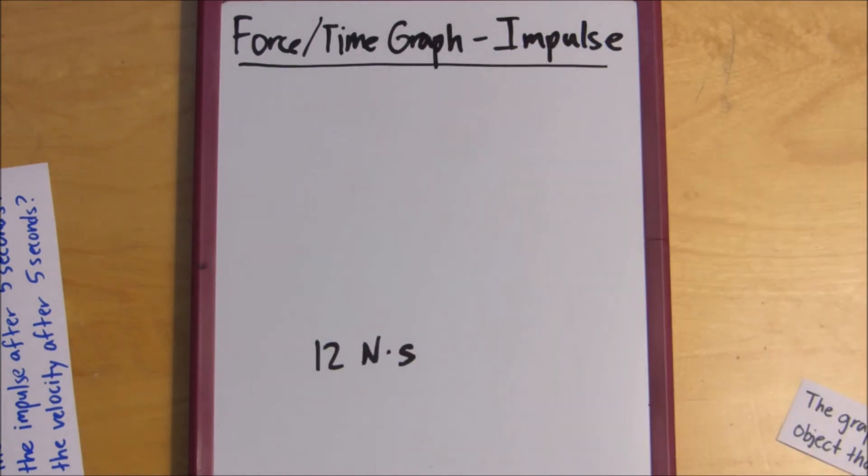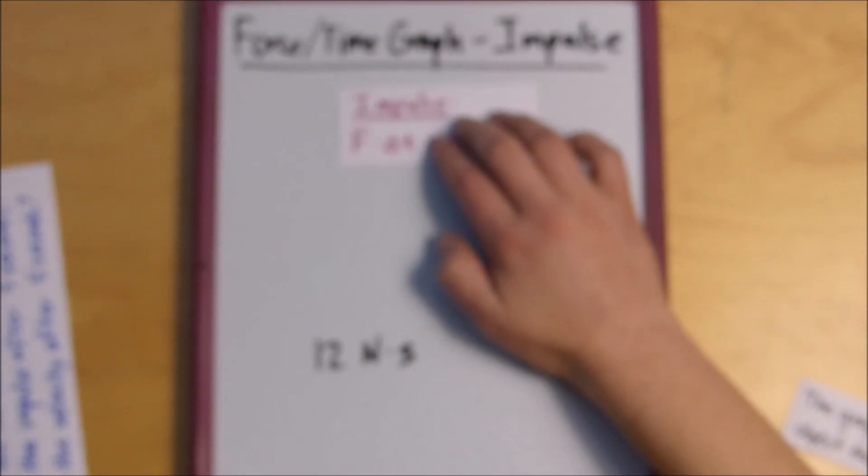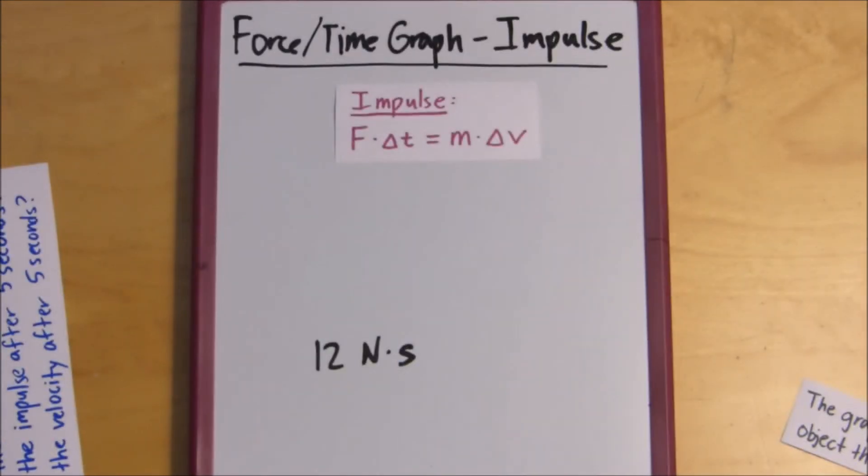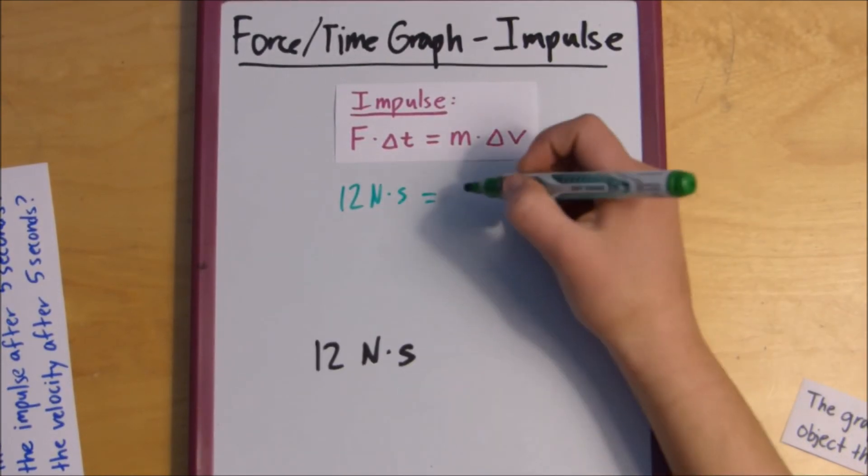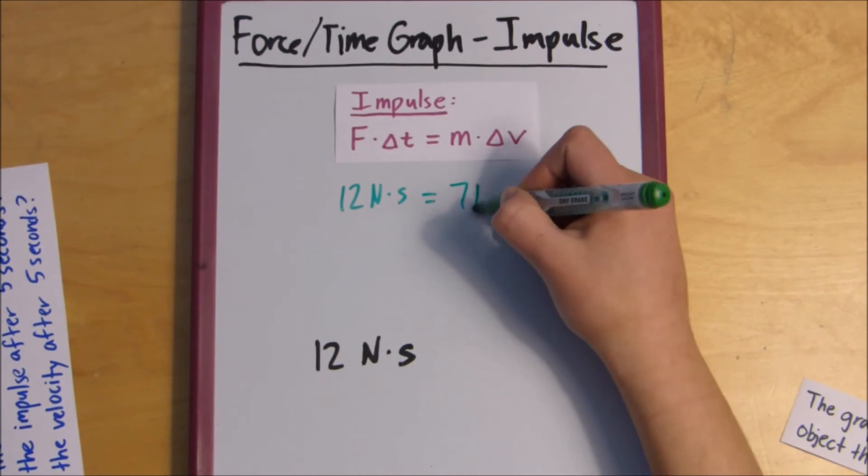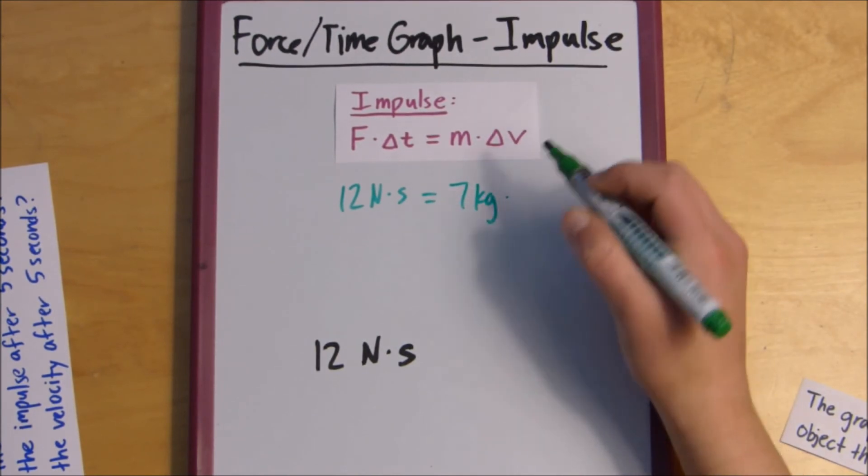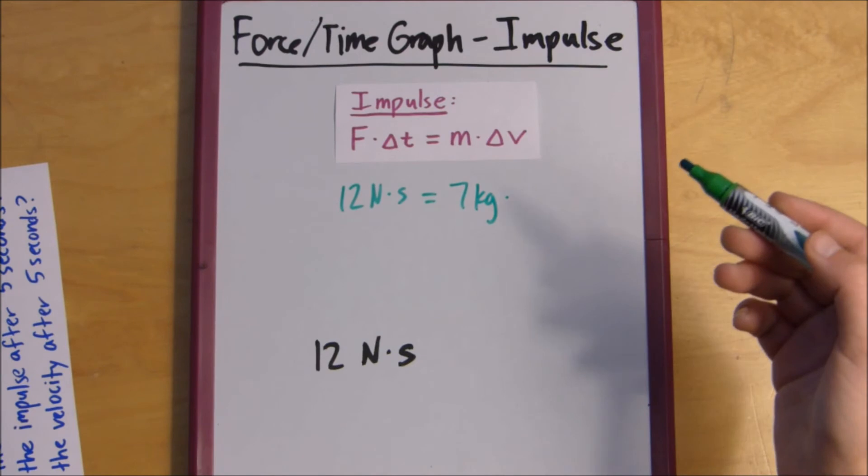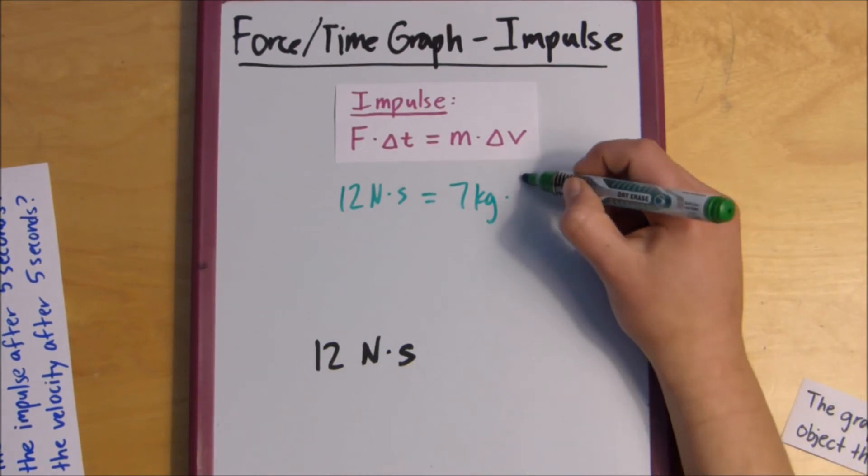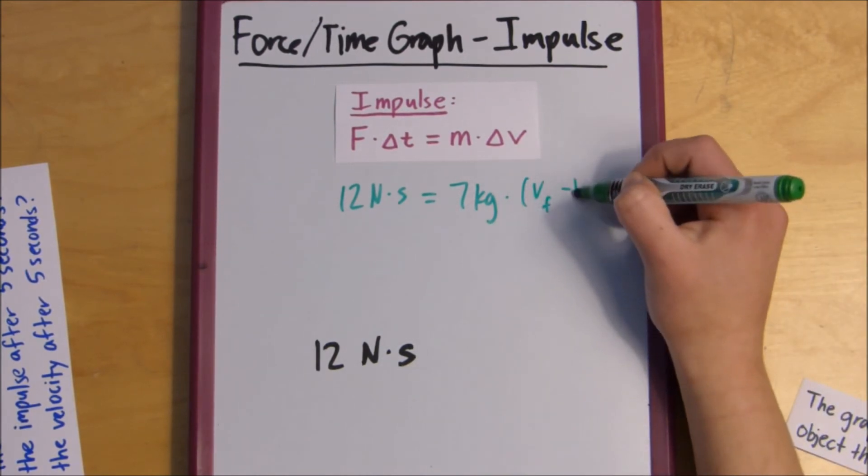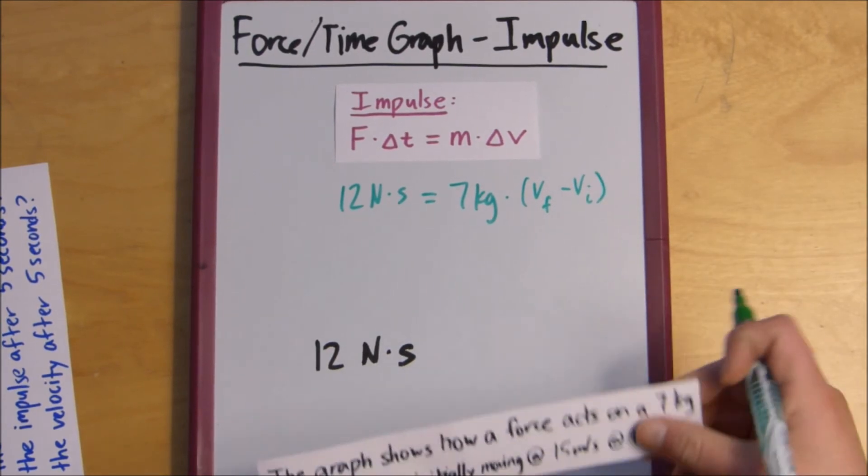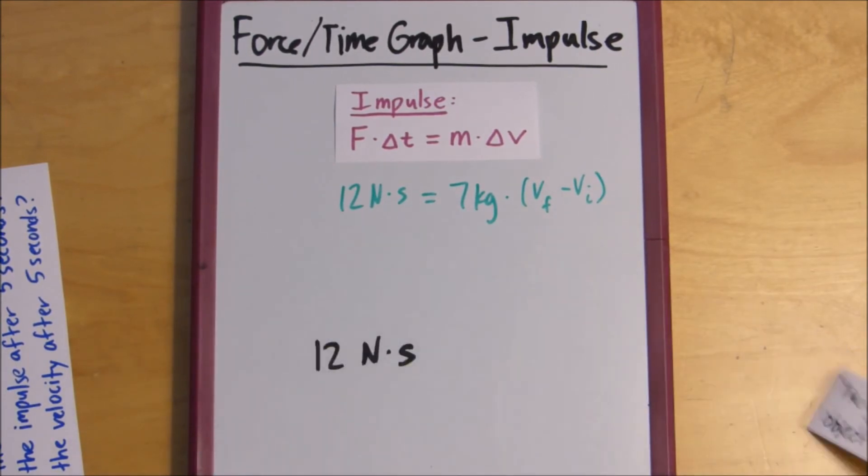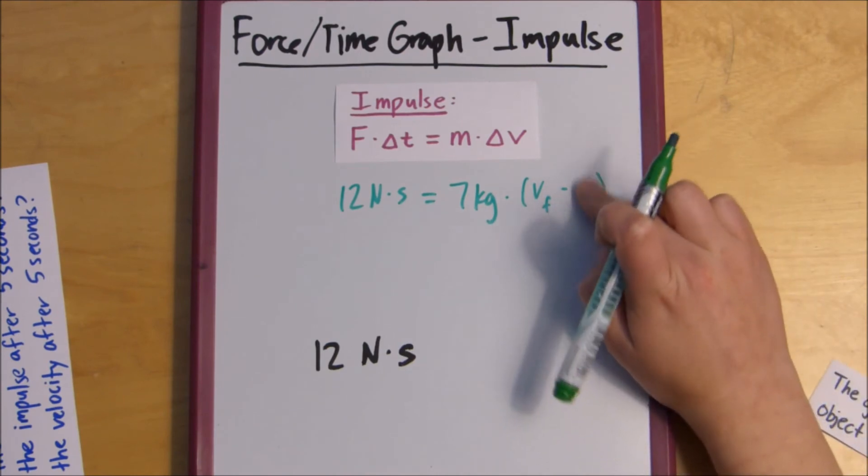So, we found one side of the equation. This is 12 newton times seconds equals mass. Our mass is still 7, 7 kilograms, and then our change in velocity. We can rewrite change in velocity as v final minus v initial. Now, we know what v initial is. It tells us in the problem. It tells us it's 15 meters per second.